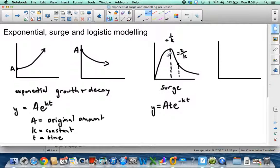So just some things to know about the Surge model: the maximum is equal to 1/K and the point of inflection is equal to 2 over K. So that's our second one there.